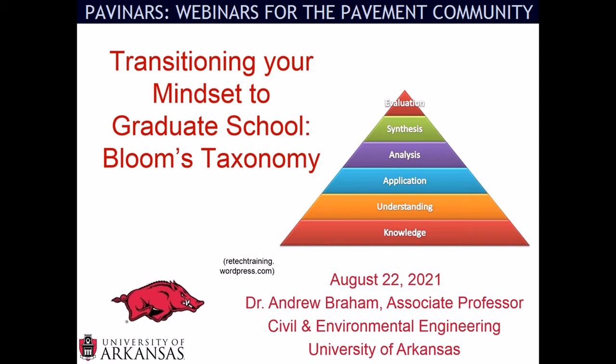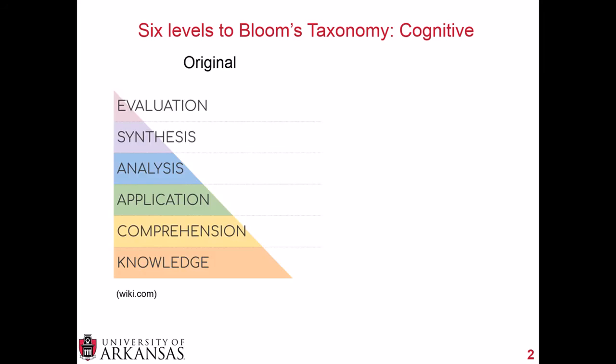We're going to talk about this transition through Bloom's Taxonomy. There are six levels to Bloom's Taxonomy on the cognitive side. The original taxonomy looked at evaluation, synthesis, analysis, and application, comprehension, and knowledge.